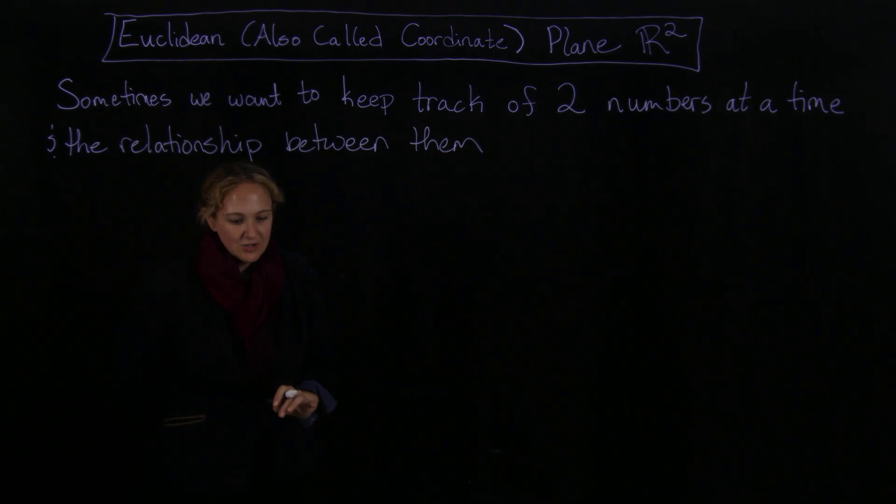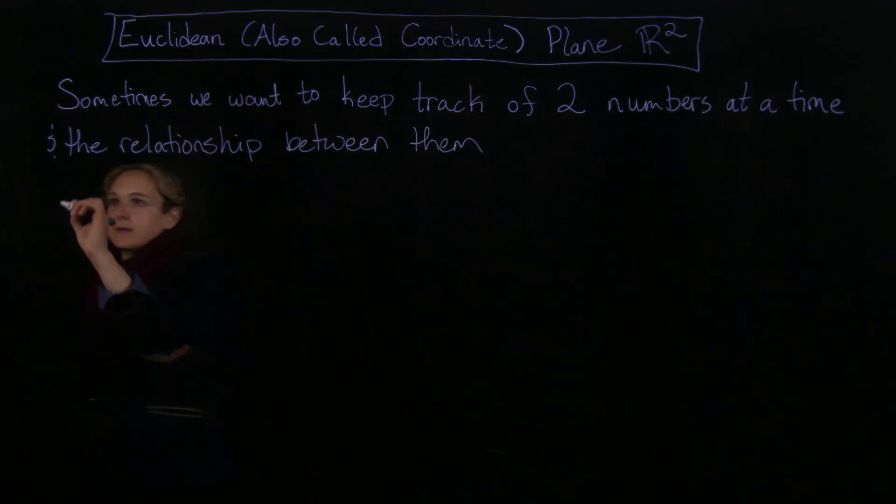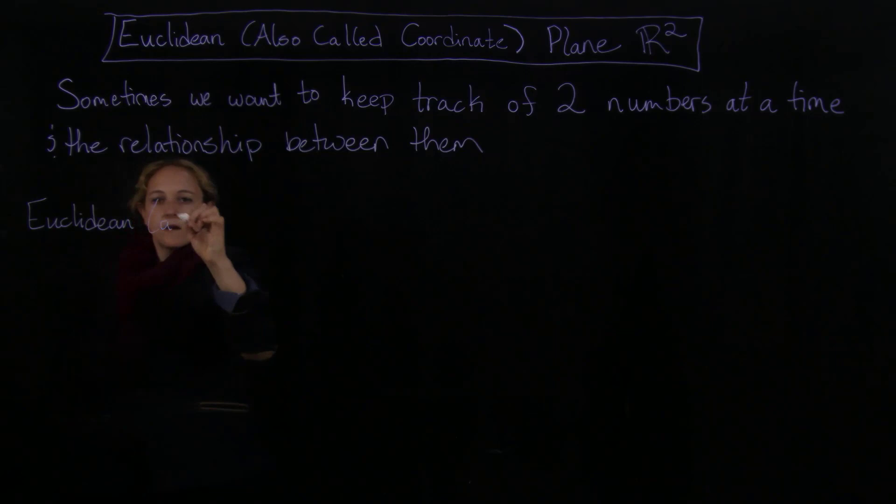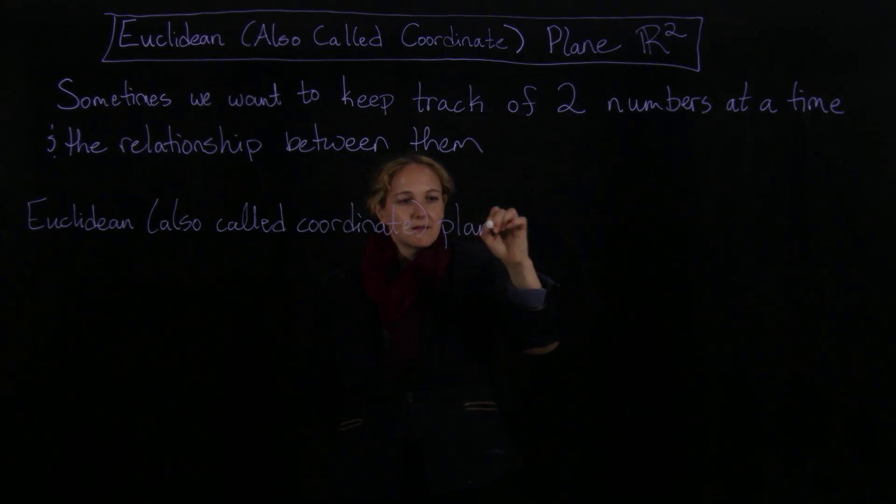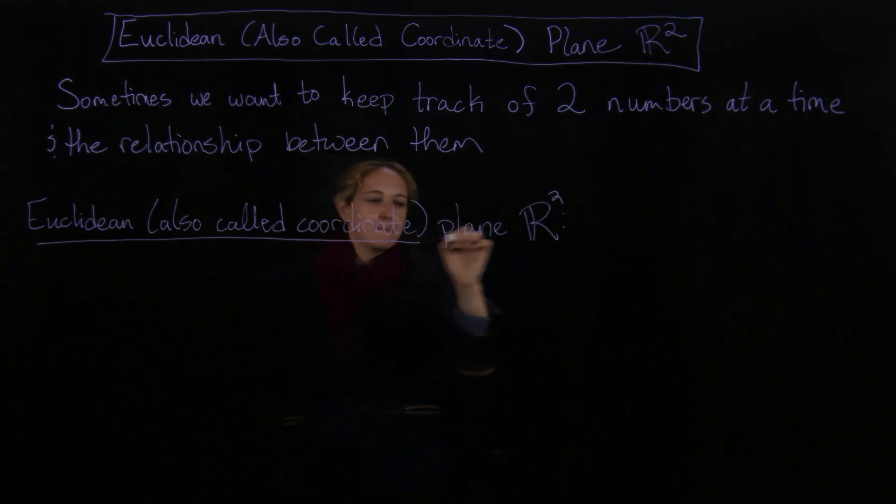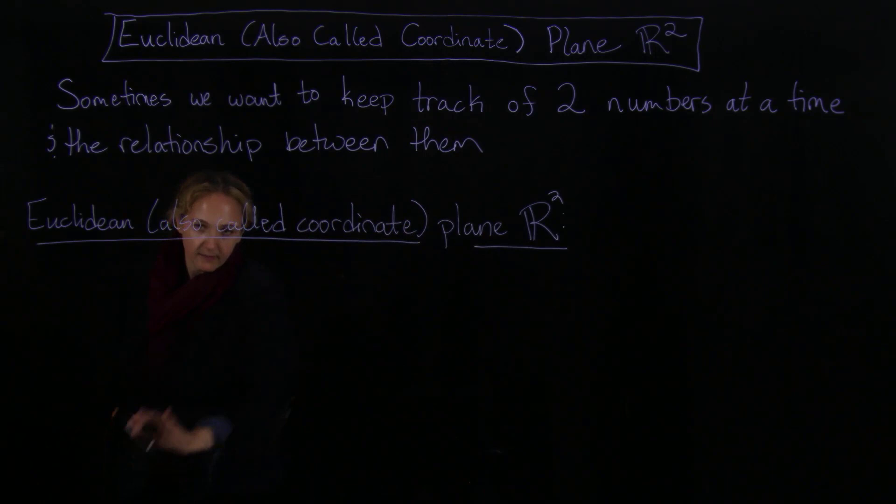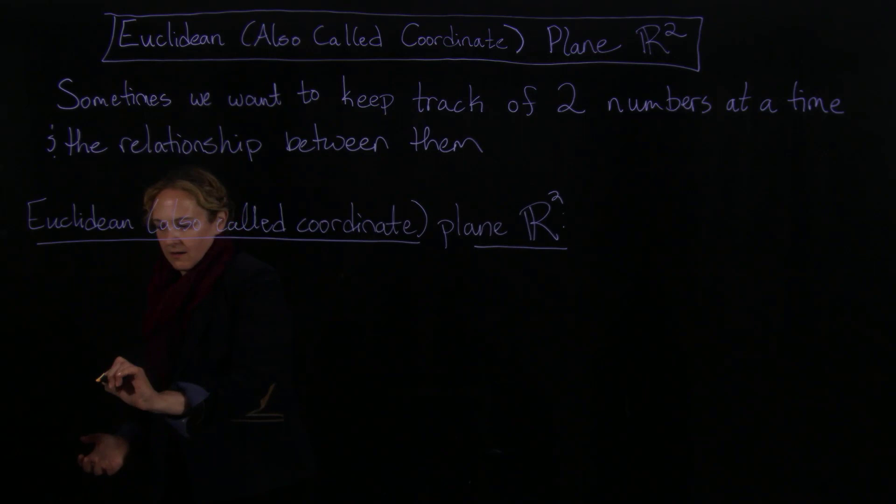So what is this? Okay, so to jump right in, the Euclidean, also called coordinate plane R2. So what is this? Well, we have two axes that we label, and they might not be X and Y. Often we like to start with them as X and Y, but this actually isn't 100% necessary.